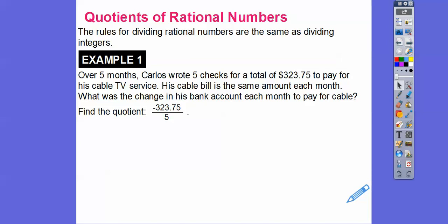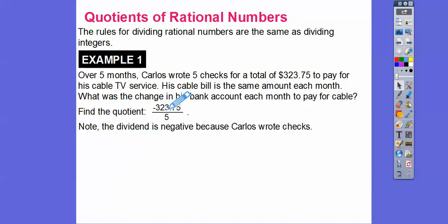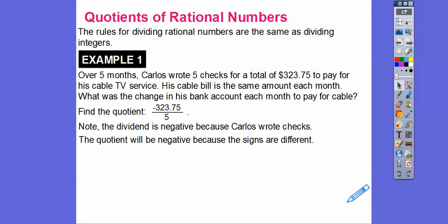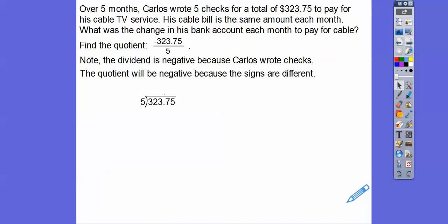Let's go ahead and divide 5 into 323.75. Our answer is going to be negative because it's coming out each time — the dividend is negative because Carlos writes checks. So remember: this is the dividend, this is the divisor, and our answer is called the quotient. The dividend is negative because Carlos is writing checks and taking money out of his account, and the divisor is positive because he writes 5 checks — that's a positive number. So the quotient is going to be negative because those signs are different.